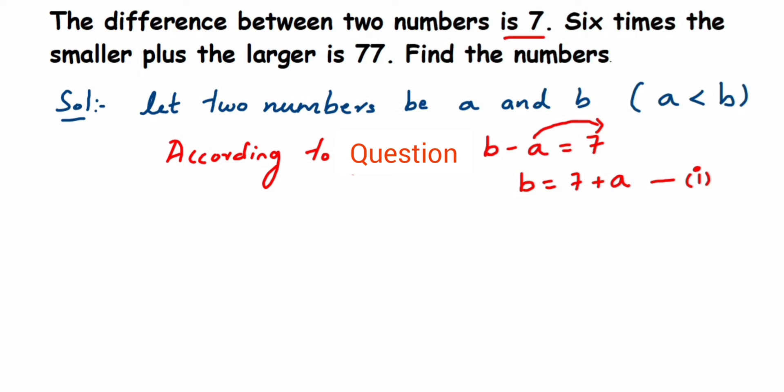Now let's come to the second condition. The second condition is six times the smaller, meaning six times the smaller number. In that case it becomes 6a plus the larger number, which is b, equals 77. This is the second equation.